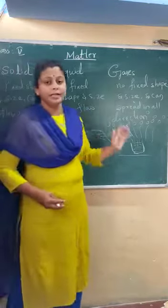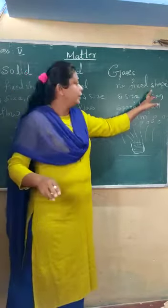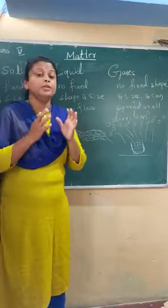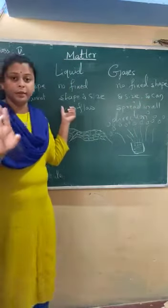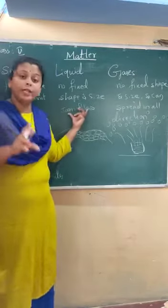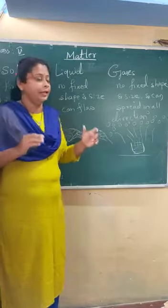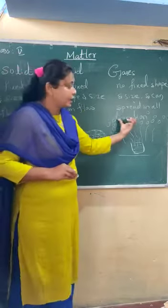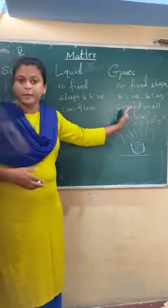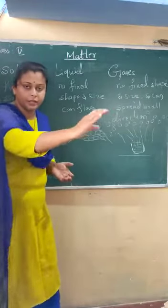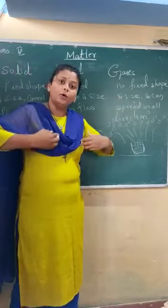The third one is gaseous form. As I told you, no fixed shape for the gas, and no particular shape or size for the gas. It can spread in all directions. Solid will not spread and solid will not flow. Liquid can flow towards the downward direction and side of the container. But gas cannot flow - it can spread in all directions. You can see the difference between liquid and gas: liquid can flow in one direction, that may be downward or side of the container, but gas will spread in all directions.